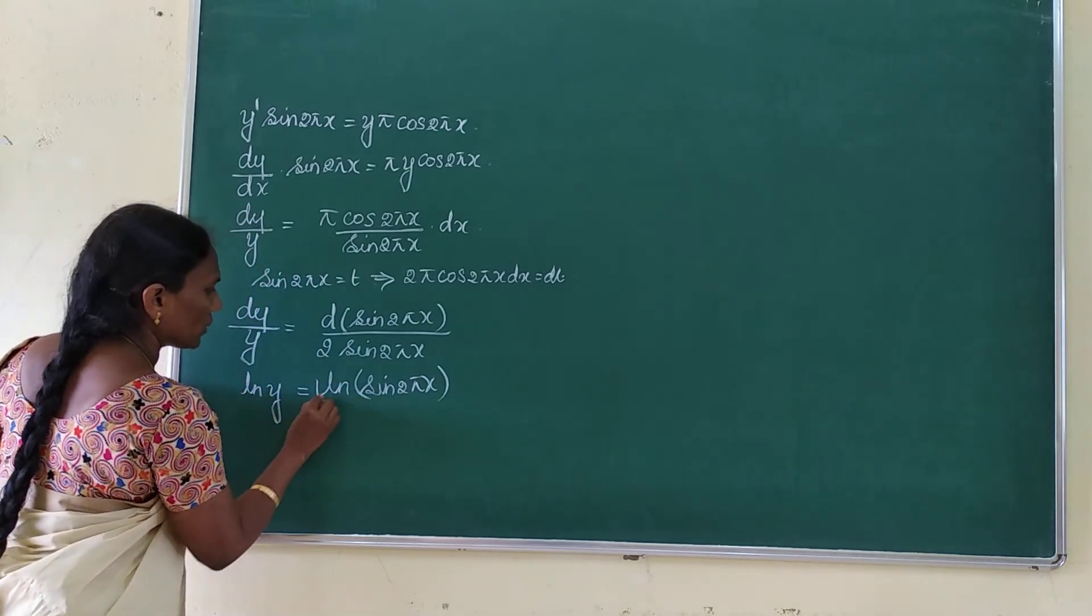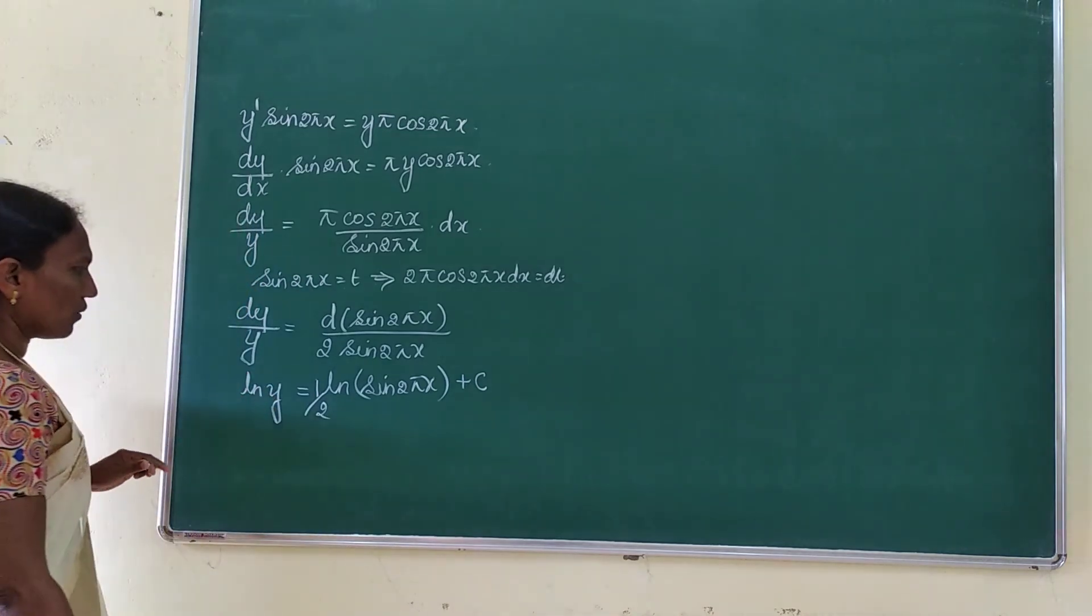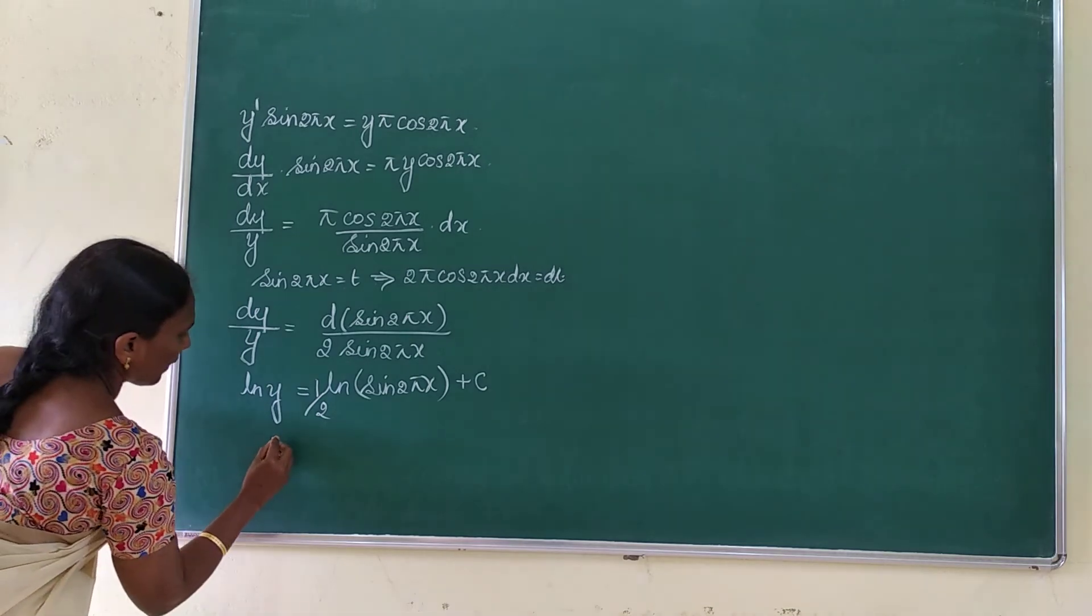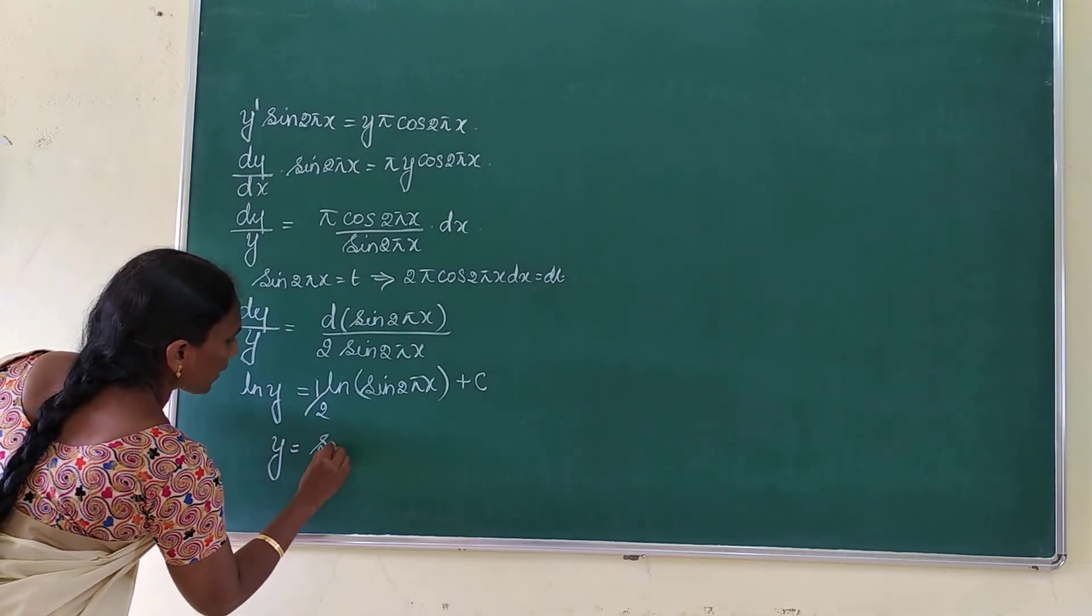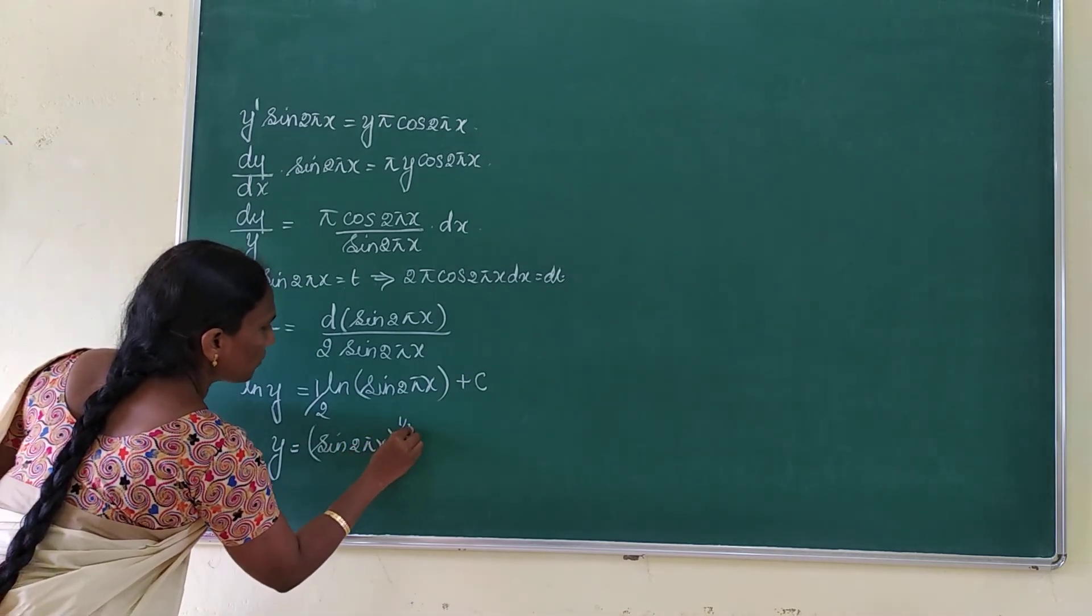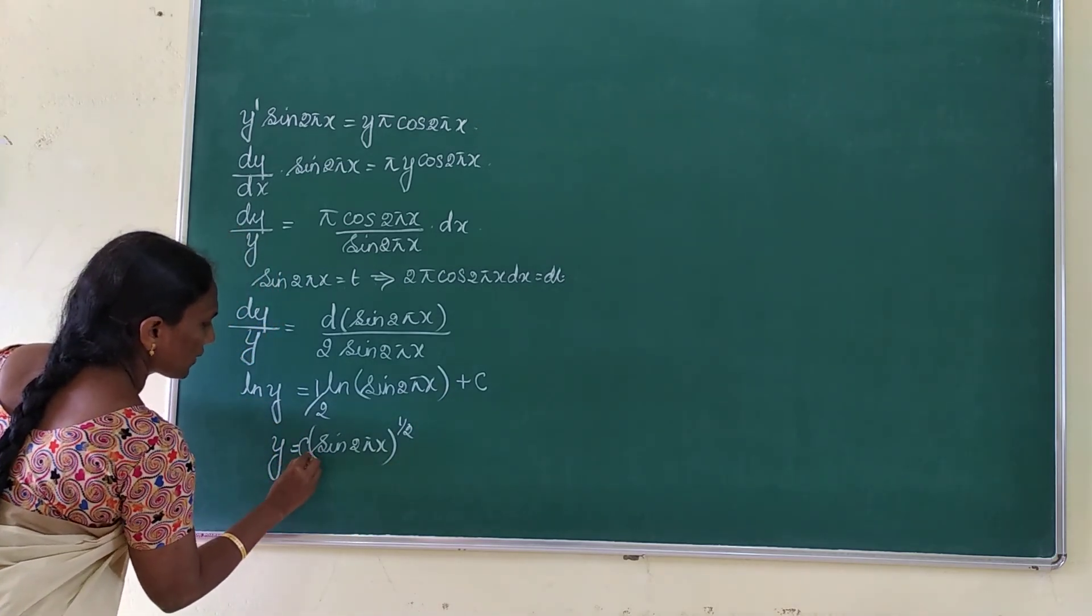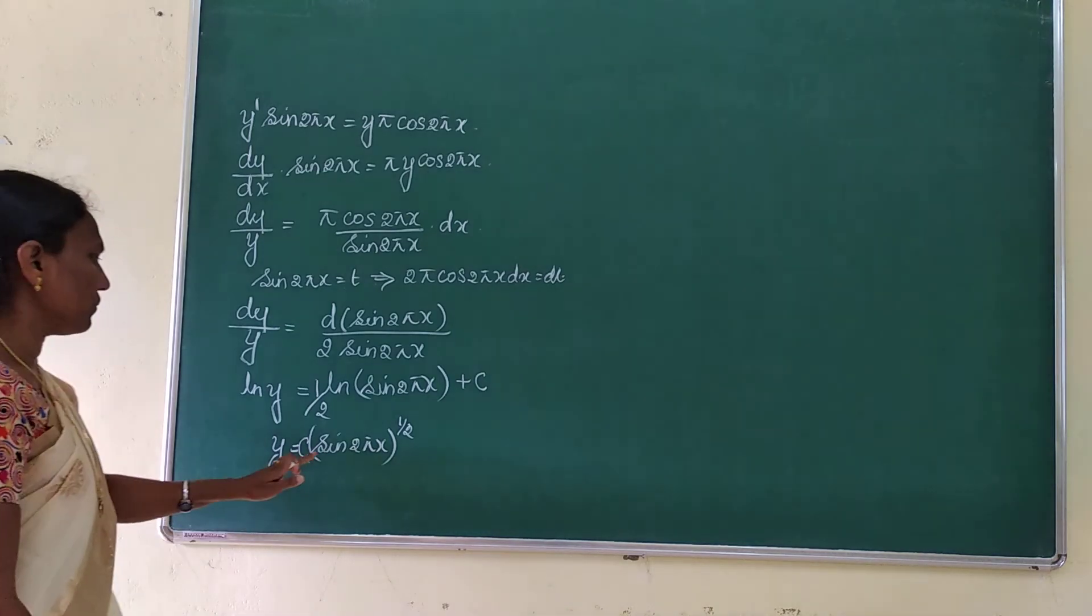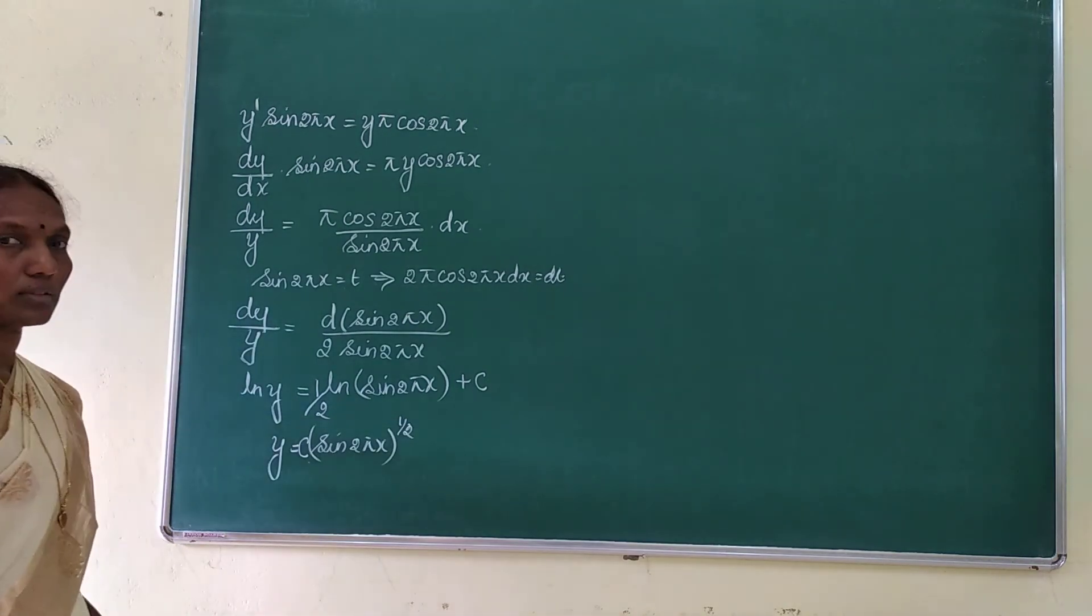Now it is equal to 2 by x, here there is 1 by x. Now if you take the e power on both sides, then you can take y is equal to sin 2 by x whole power, and this we can take as a constant C. So y is equal to C sin 2 pi x whole power is the solution of this differential equation. Thank you.